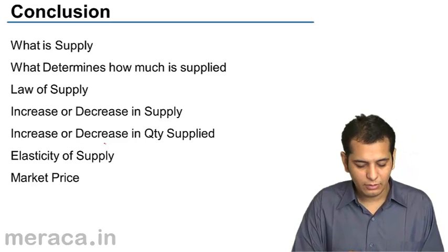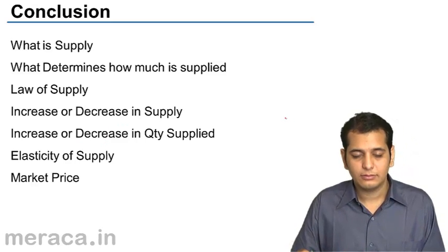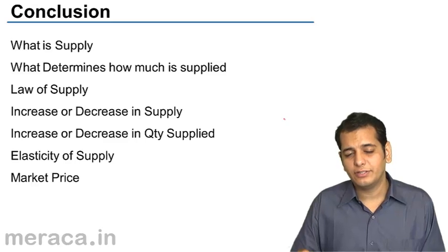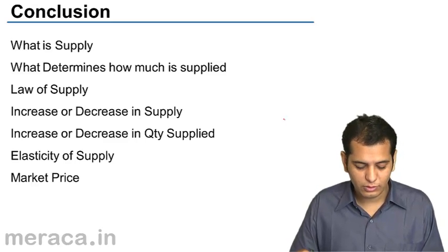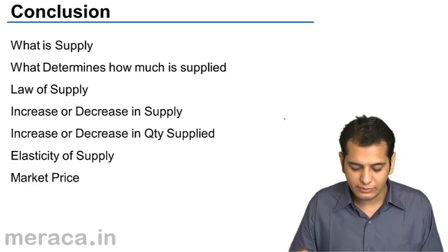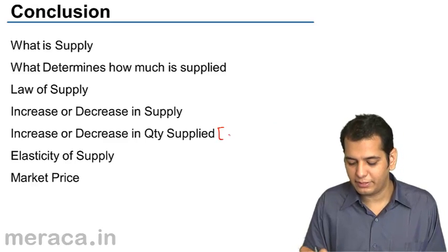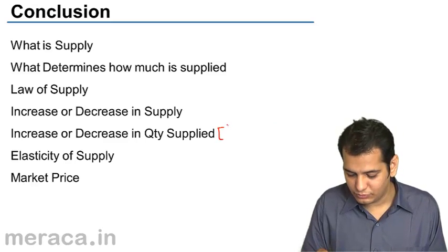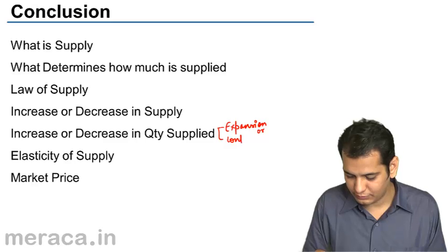Then we've done what is increase or decrease in supply, and also what is increase or decrease in quantity supplied — this is expansion or contraction.